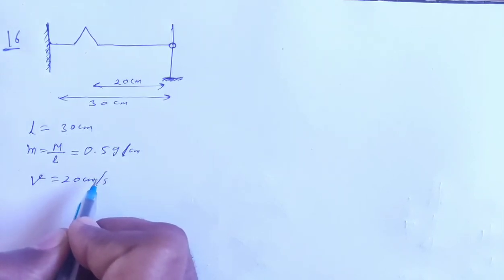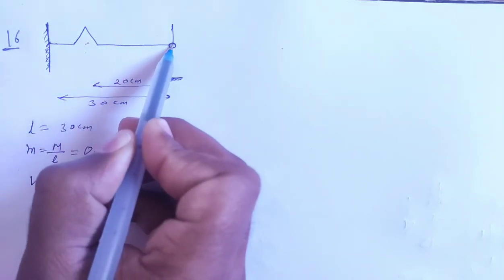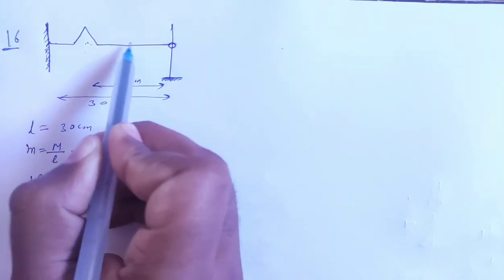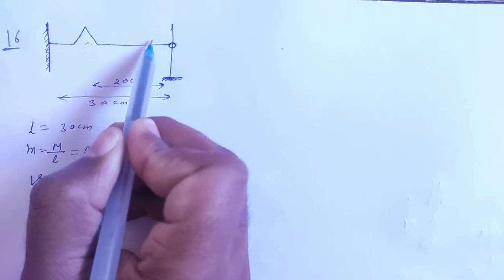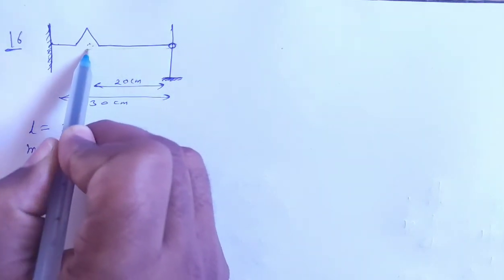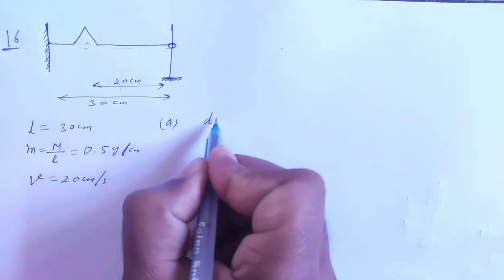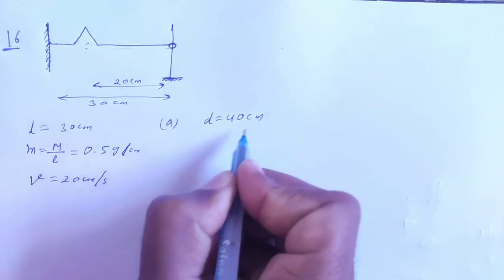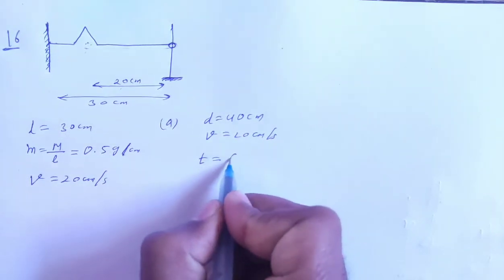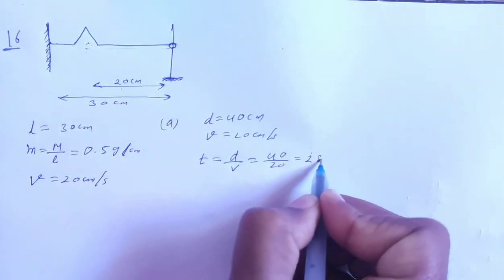First question: find the time taken by the string to regain its shape. The shape will regain when the pulse travels to the ring (20 cm) and returns (20 cm), covering a total distance of 40 cm. Distance = 40 cm, speed = 20 cm/s, so time = distance/speed = 40/20 = 2 seconds.